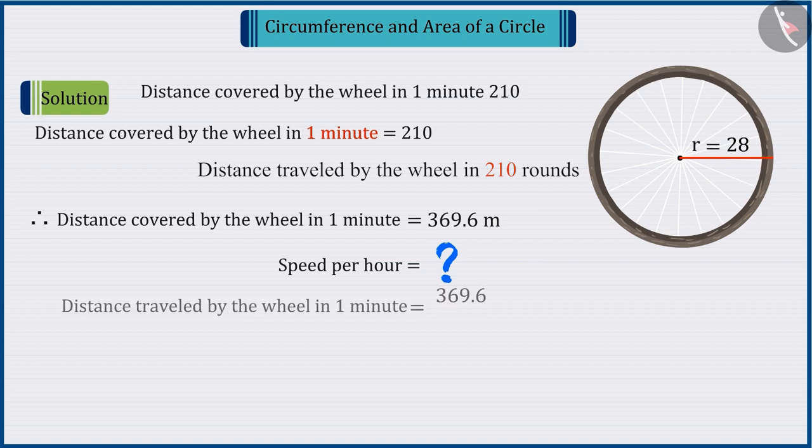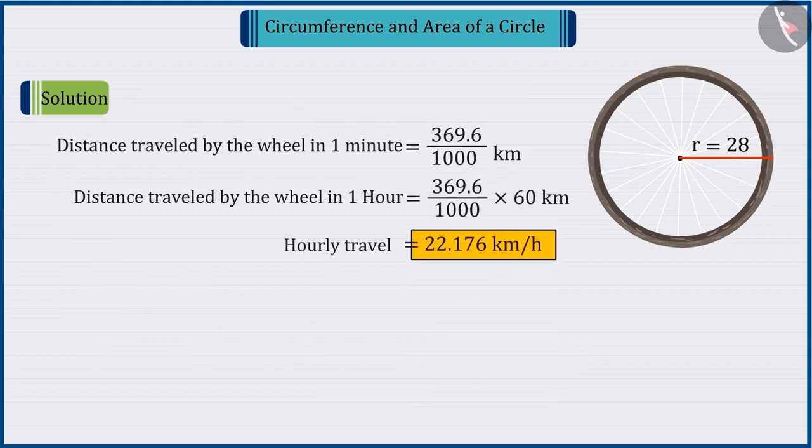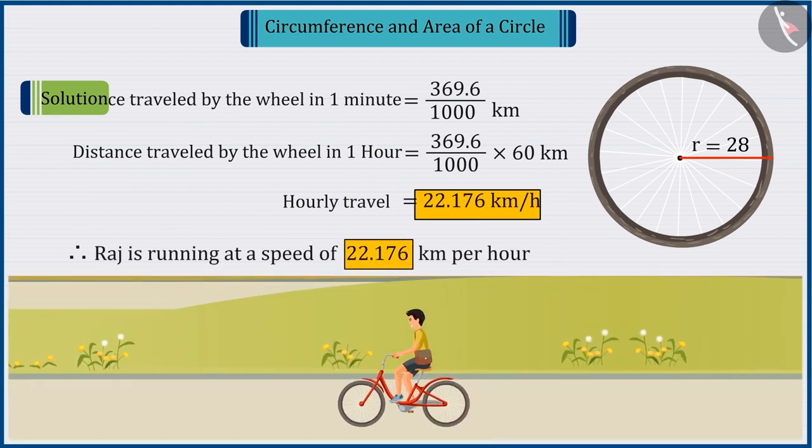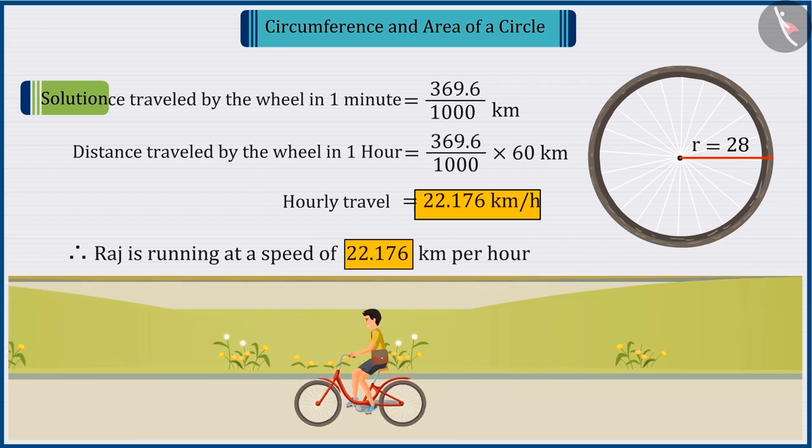Absolutely correct! It's speed in km per hour. Because we have to find the speed per hour, we also multiply by 60. On solving this, we get 22.176 km per hour. So, we can say that Raj is going at a speed of 22.176 km per hour.